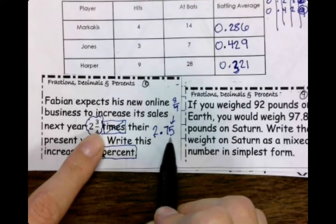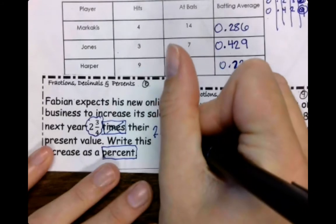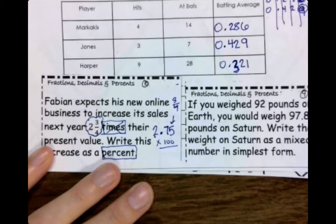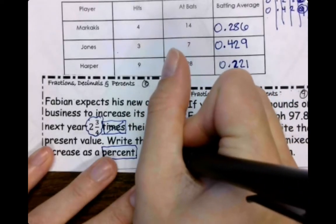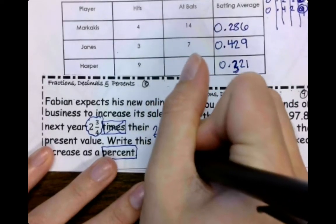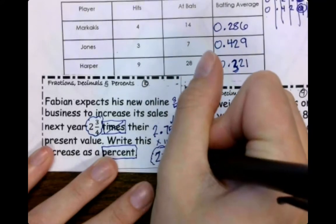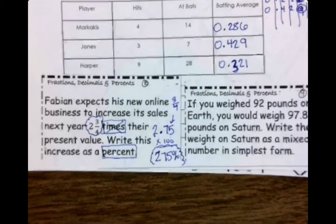So again, we have the two from right here. The three-fourths is where we get the point seven five. So to change that to a percent, we multiply it by 100, and that would give us 275%. Ooh, he's got big goals, doesn't he? Big goals. All right.